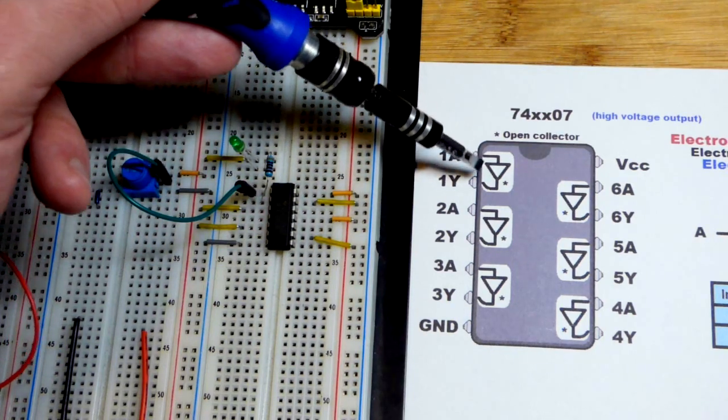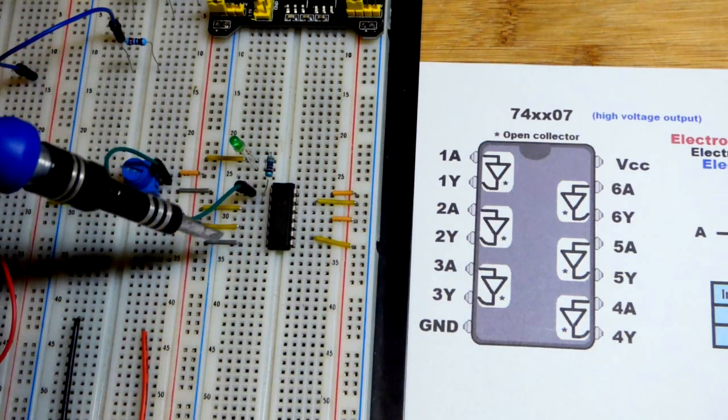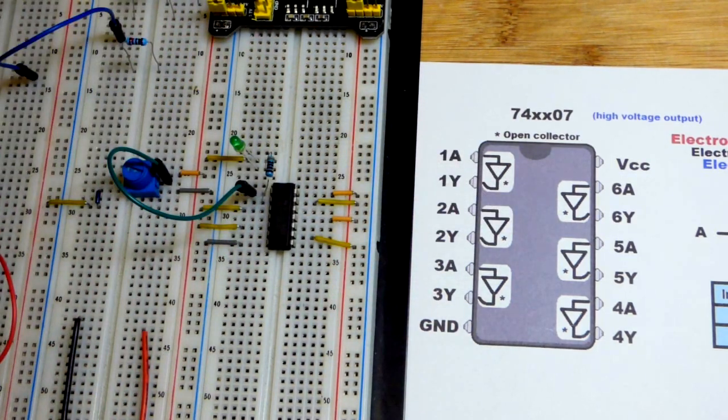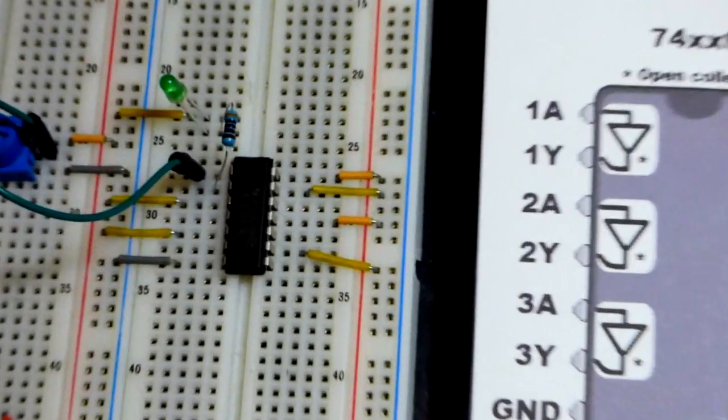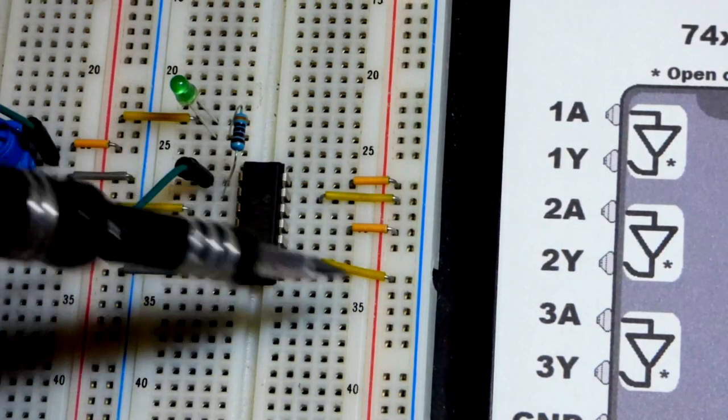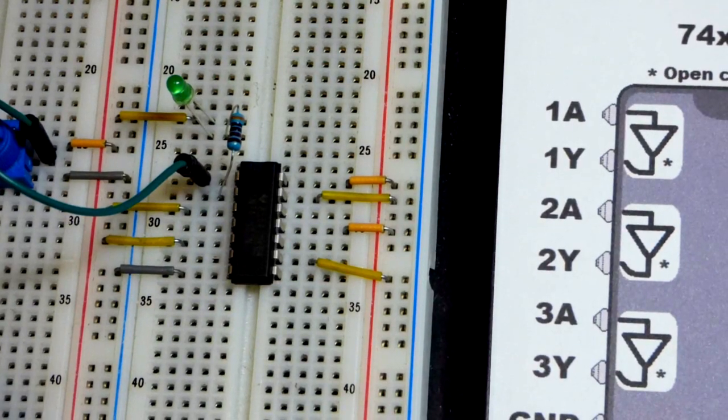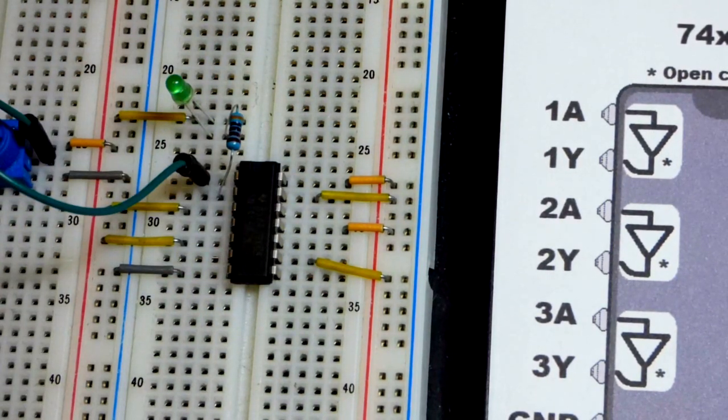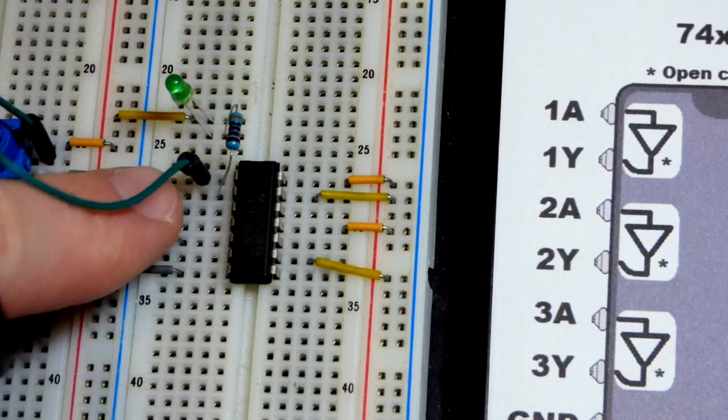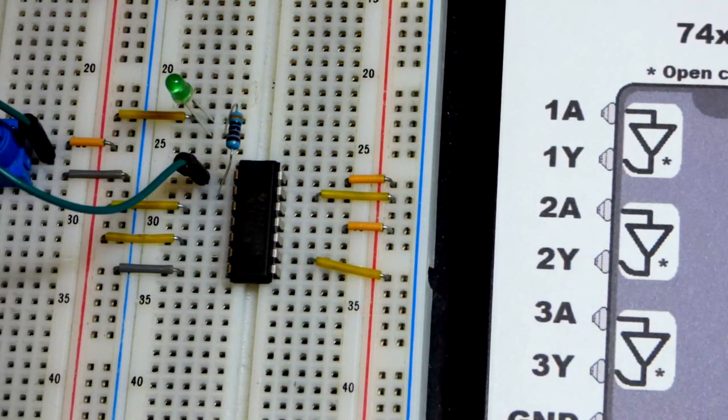We're only using this top buffer. These other ones we're not going to use. We don't want to leave the inputs floating though, according to the data sheet. Wherever there is an input we're not using, we're putting directly to the positive rail. That prevents the transistors from picking up stray signals. You could also put it directly to the negative rail.